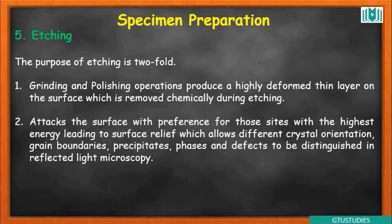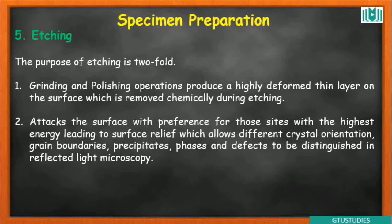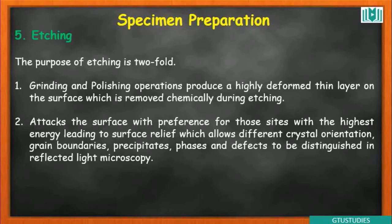Under the microscope, etching highlights the microstructure. A chemical etchant, similar in principle to a dye penetrant used in NDT, is applied to the surface. If the surface has been properly prepared, the etchant marks and highlights the structure, allowing features to reflect light differently.